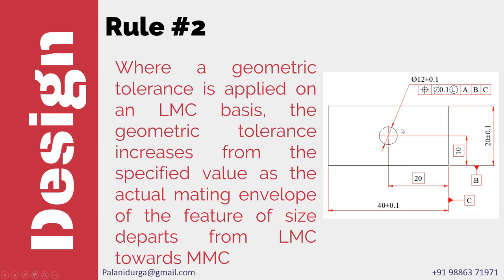This example is about using least material condition modifier. When the hole is produced at its least material condition of 12.1, the positional tolerance is diameter 0.1. When the hole departs from 12.1 and moves towards maximum material condition of 11.9, the positional tolerance increases from 0.1 to 0.3. In applications where we have to ensure minimum wall thickness, we use least material condition modifier. Aeronautical and other critical precise applications where material thickness is very important also use least material condition modifier.